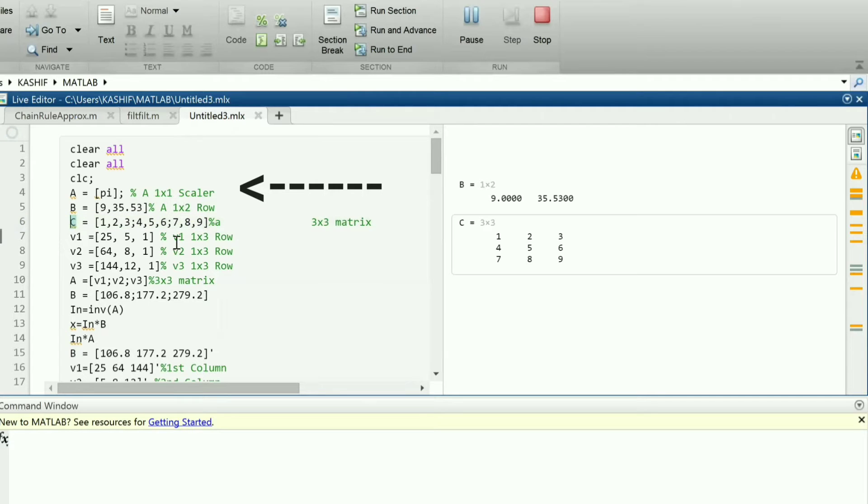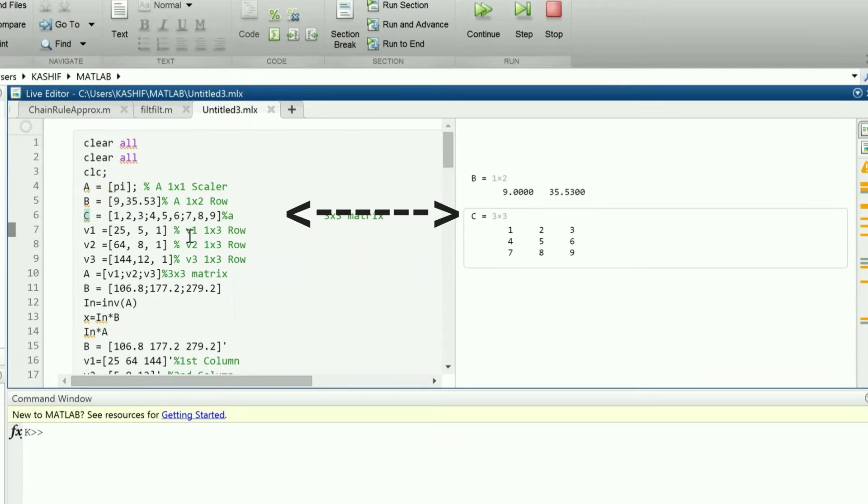We have a semicolon at the end of the statement, meaning that the output will not be displayed. However, for the rest of the statements, no semicolon will be used just to see what is happening. Next we generate the 1 by 2 vector b, then a 3 by 3 matrix. Note that each row is terminated by semicolon. Row elements can be either comma separated or space between them.